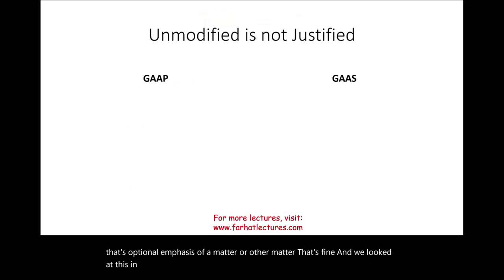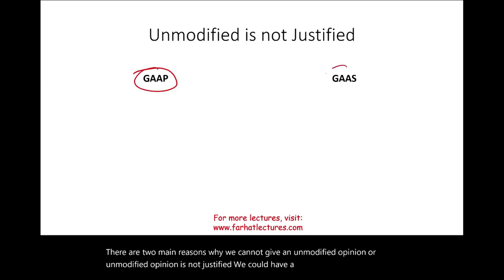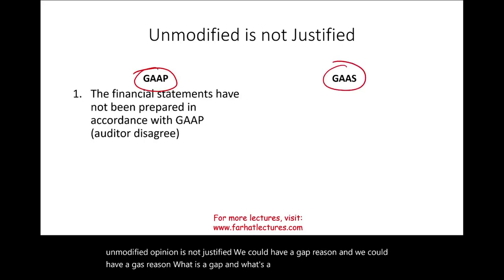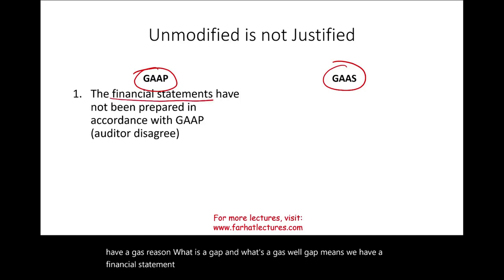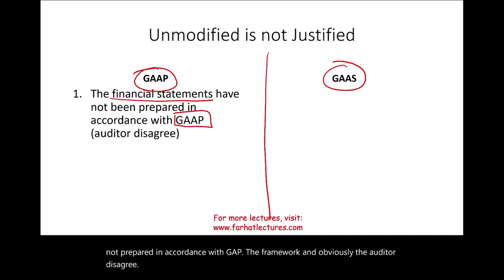There are two main reasons why we cannot give an unmodified opinion. We could have a GAAP reason and we could have a GAAS reason. GAAP means we have a financial statement issue — a misstatement. The financial statements are not prepared in accordance with GAAP or the framework, and the auditor disagrees. We looked at these conditions in the prior session.